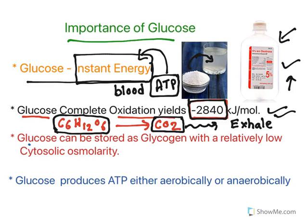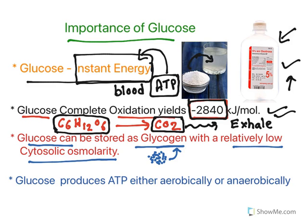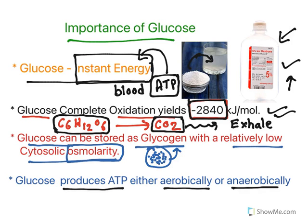Glucose can be stored as glycogen with relatively low cytosolic osmolality. Almost 100,000 glucose molecules can come together and polymerize to give glycogen. Glycogen can be stored as a fuel molecule. Storing glycogen will not increase the osmolality of the cell — if osmotic gradient is increased, cell survival becomes difficult. But that will not happen when glucose is converted to glycogen, hence this is another importance of glucose.